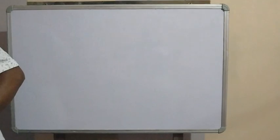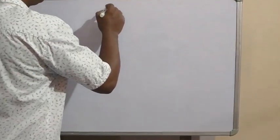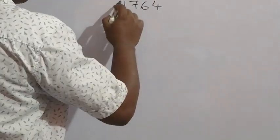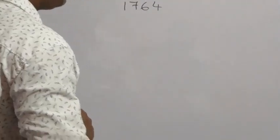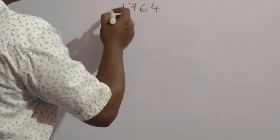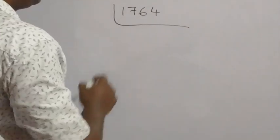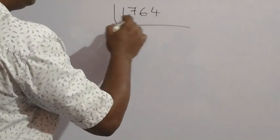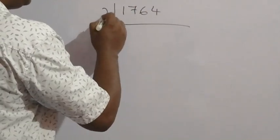Let the number be 1764. We have to find the square root of this number by the prime factorization method. We have to find the prime factors only. The unit digit is 4, so it is divisible by 2. So divide by 2.